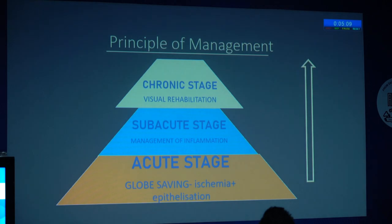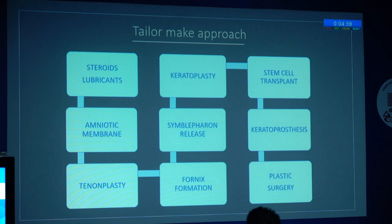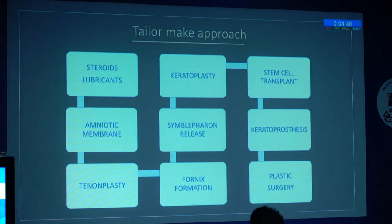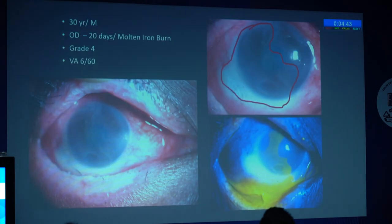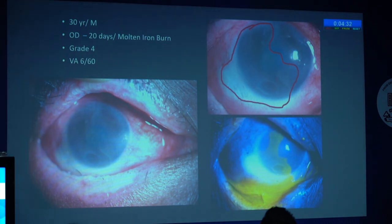The principle of management remains the same. At the acute stage it should be globe-saving surgery; at the subacute stage, manage the inflammation; and at the chronic stage, only then start visual rehabilitation. You have to take a tailor-made approach from the various permutations and combinations of procedures available for sequelae of ocular surface burn. Starting from an example of unilateral ocular surface burn — here is a 30-year-old patient presenting 10 days after a molten iron burn, which is a thermal burn, much deeper than a usual lime burn injury.